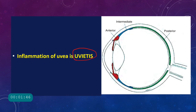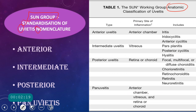The iris and ciliary body form the anterior uvea. The ciliary body is divided into two parts: the pars plicata, which bears the processes to which the zonules of the lens are attached, and the pars plana. The pars plicata comes under anterior uvea and the pars plana under intermediate uvea. The choroid forms the posterior uvea. The SUN working group classified uveitis anatomically into anterior, intermediate, posterior, and pan-uveitis.